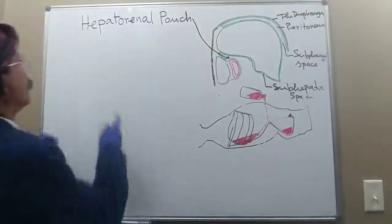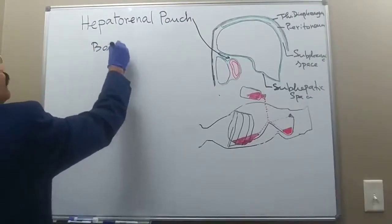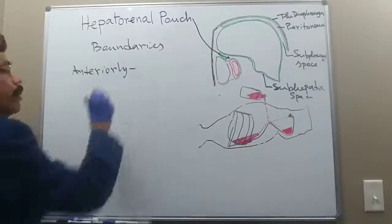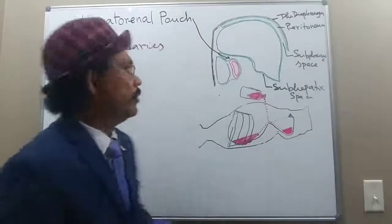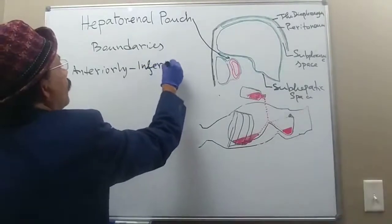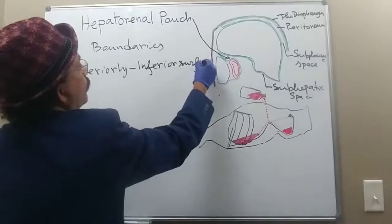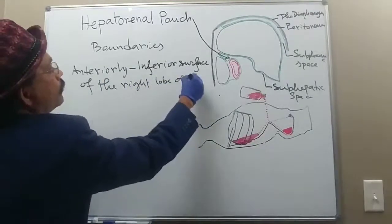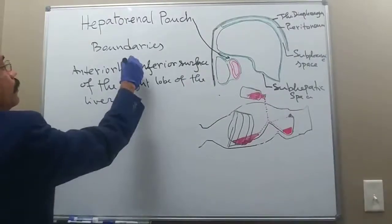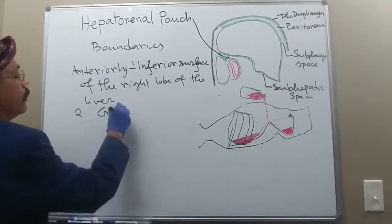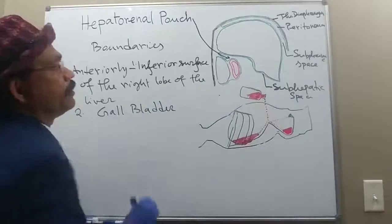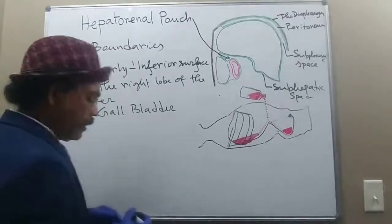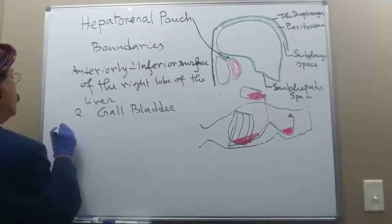Going to the boundaries of the hepatorenal pouch: anteriorly, it is bounded by the inferior surface of the right lobe of the liver and also the gallbladder.